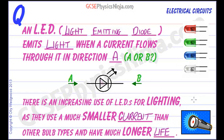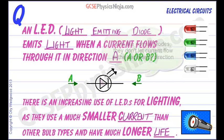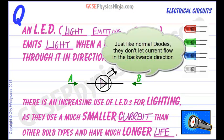Even in household lighting now, you'll find LED lights have a lower current and a longer life, so they're more energy efficient. So those are light emitting diodes — just like diodes but they emit light, and there is the symbol with two light arrows coming out of it.